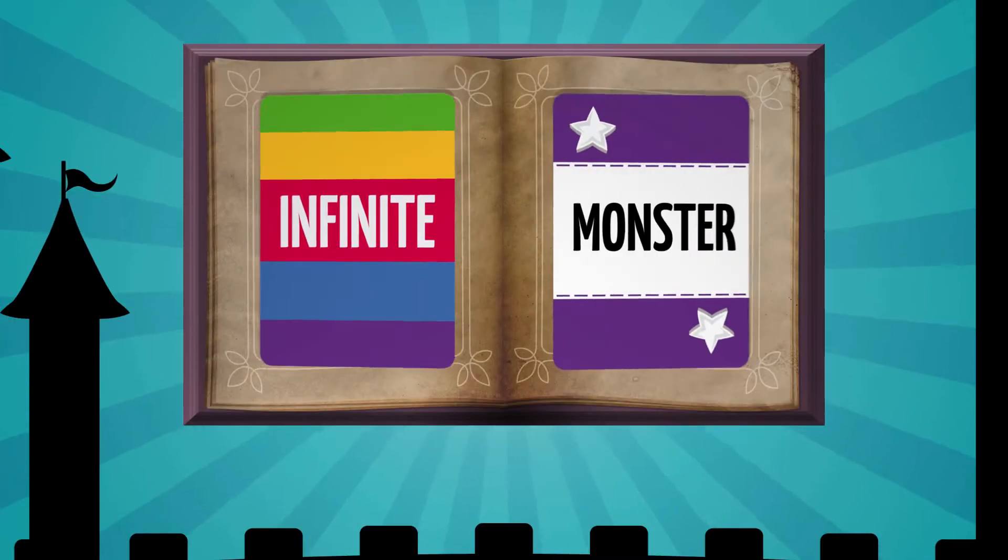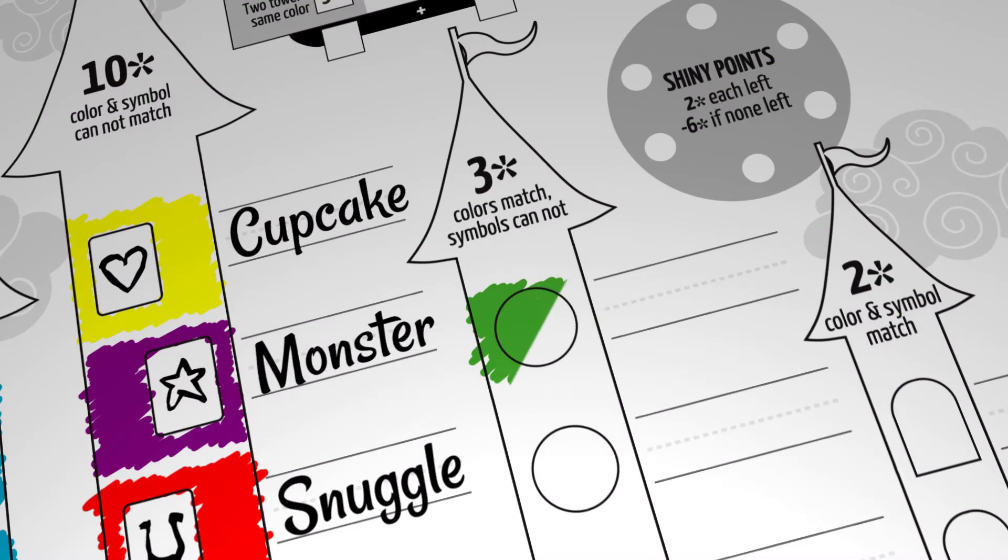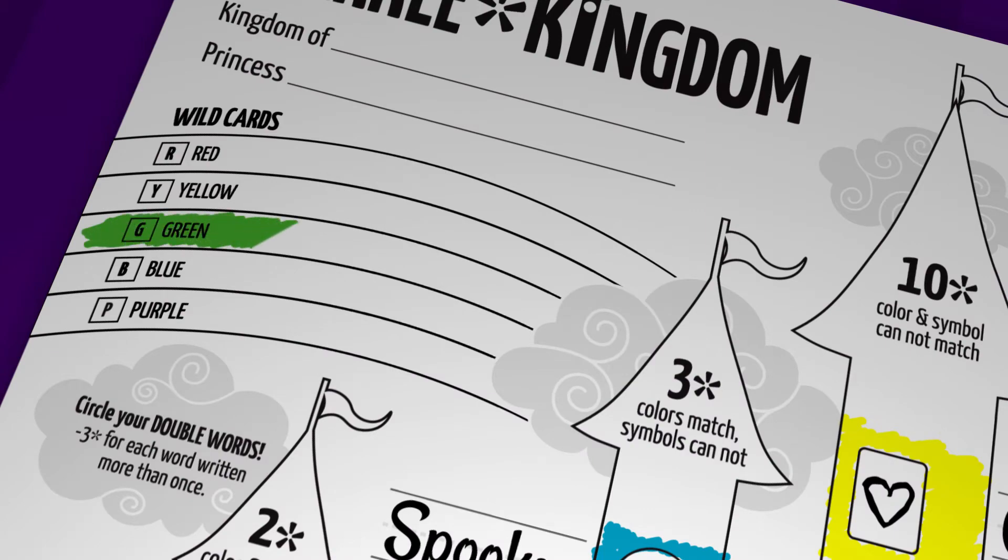A wild card allows you to pick any color and add it to an empty space, ignoring symbol requirements. You may only use each color once, so color in the rainbow stripe any time you place a wild card.